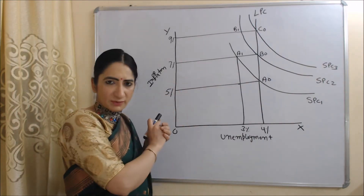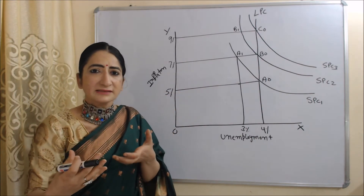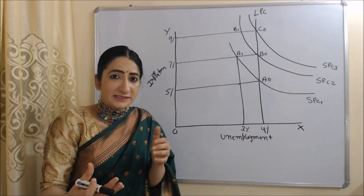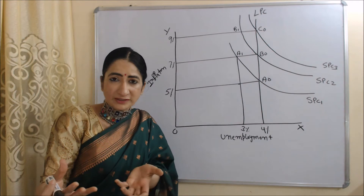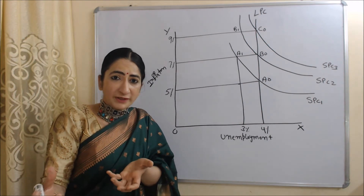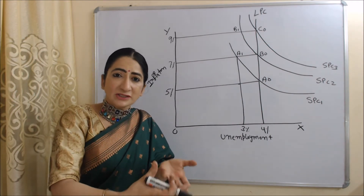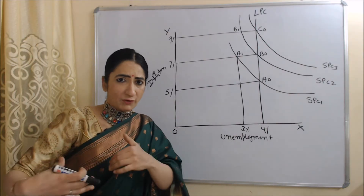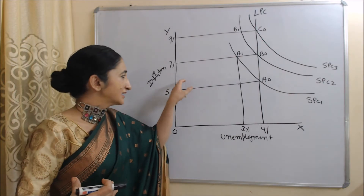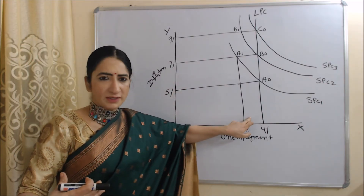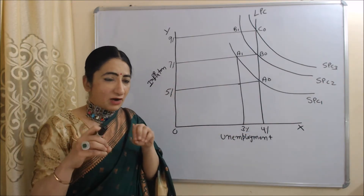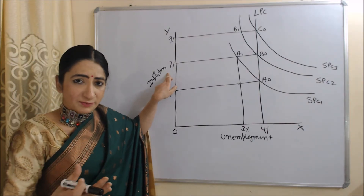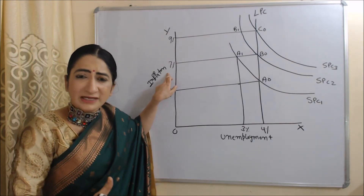As inflation increases, unemployment falls from 5 to 3%, and our equilibrium point moves to A1. Why? As inflation increases, prices increase. The producer is selling goods at a higher price, so his profit increases. As profit increases, production increases, and he hires more and more employees. As a result, unemployment falls in the economy.